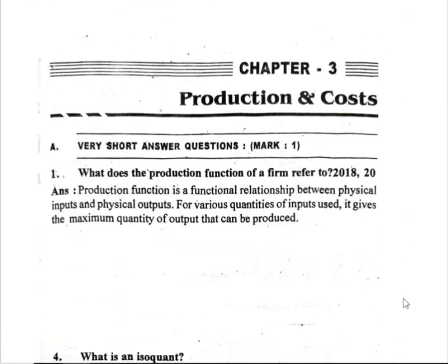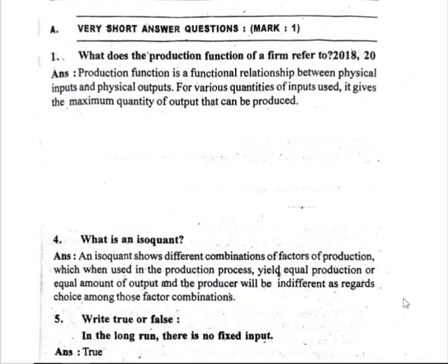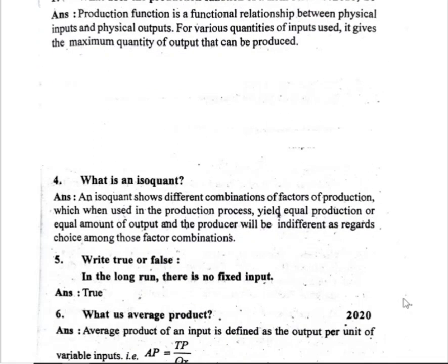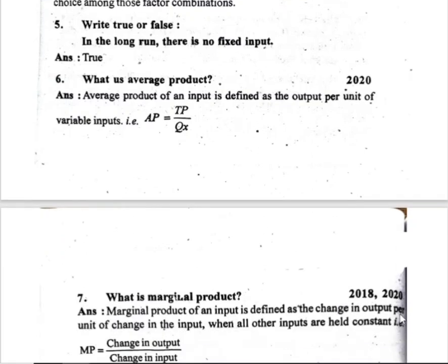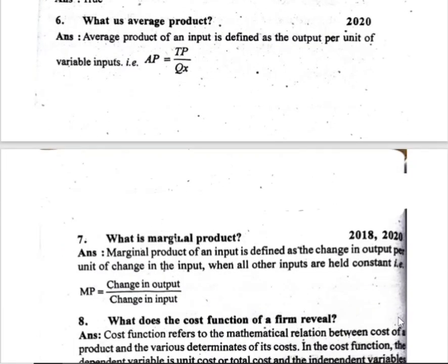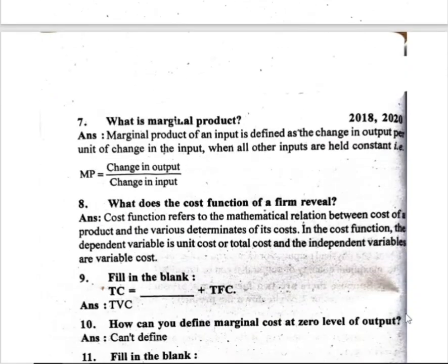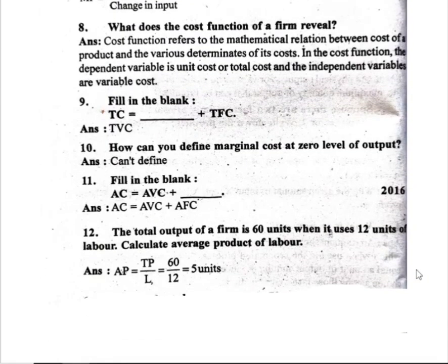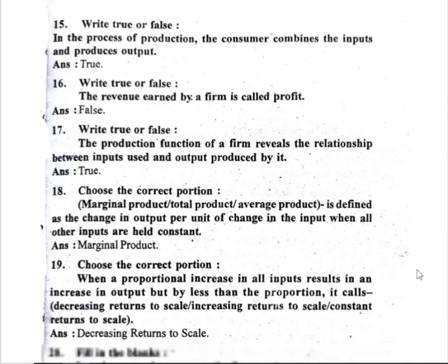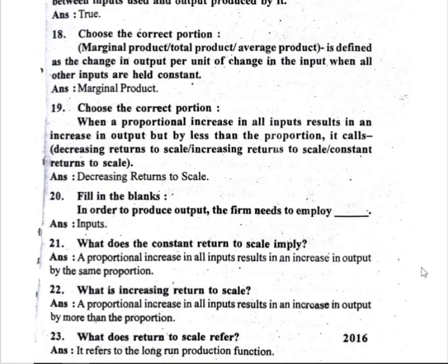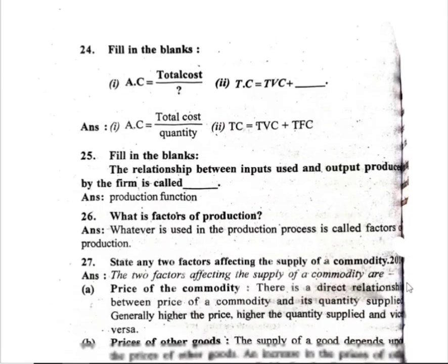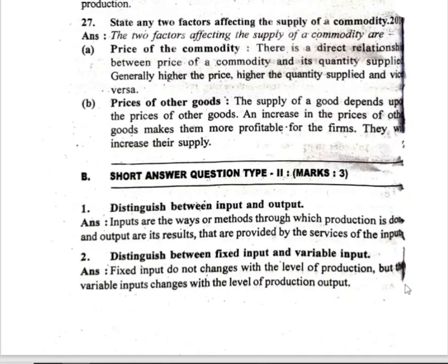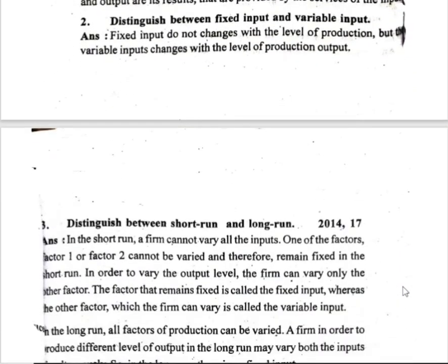Chapter 3: production and cost. What does the production function of a firm refer to? What is isoquant? Questions 5, 6, 7, 8, 9, 10, 11, 12 are important. Questions 15–19, 20, 21, 22, 23, 24, 25, 26, 27 are also important. Three-mark questions: 1, 2, 3, 4, 5, 6 are noted.